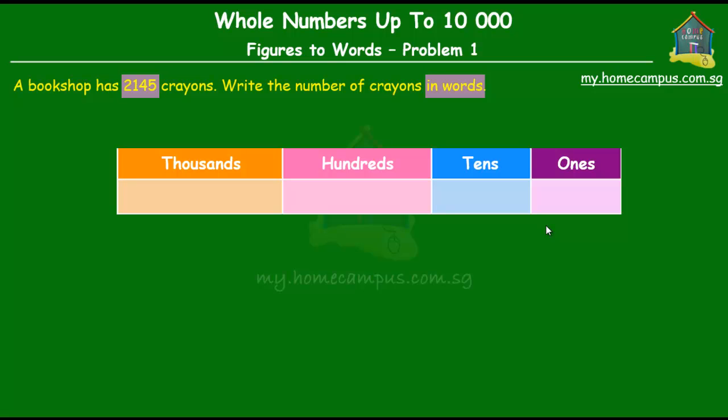We know that since this number is a four-digit number it will go only up to thousands. Next, what we do is we fill in this chart with this number two, one, four, five.